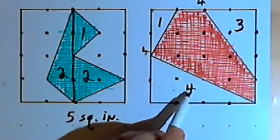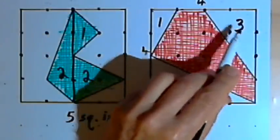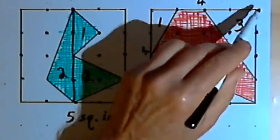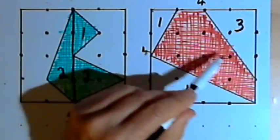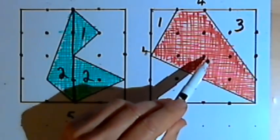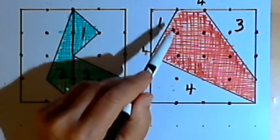If I add those together, 4 plus 1 is 5, plus 3 is 8. I'll take that 8 and subtract it from the area of the entire box.